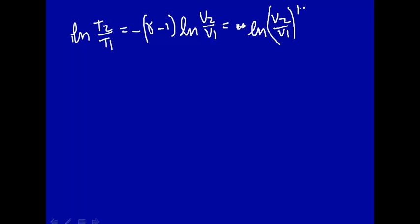Look, natural log of this, natural log of this, so you can take the antilog of both sides to give you T2 over T1, and we'll give you V2 over V1, raised to the 1 minus gamma power.